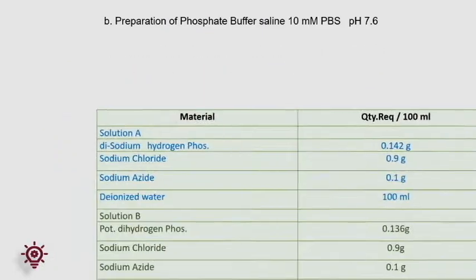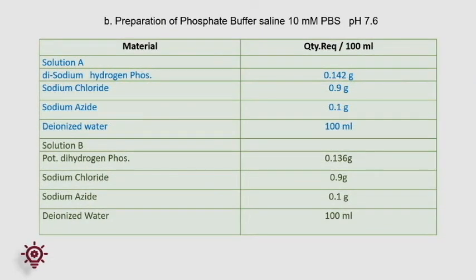Preparation of 10 millimolar PBS pH 7.6, used for the control line. Prepare solution A: weigh sodium dihydrogen phosphate, sodium azide, and sodium chloride in deionized water, mix and dissolve. Similarly for solution B: weigh potassium dihydrogen phosphate, sodium azide, and sodium chloride in deionized water, mix and dissolve. Then mix solution A with solution B to get pH 7.6.